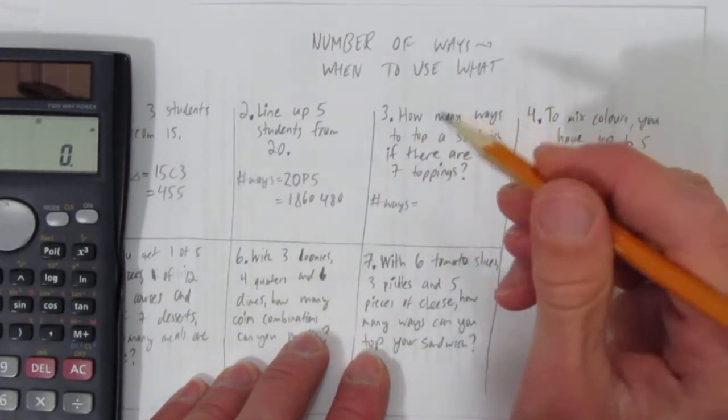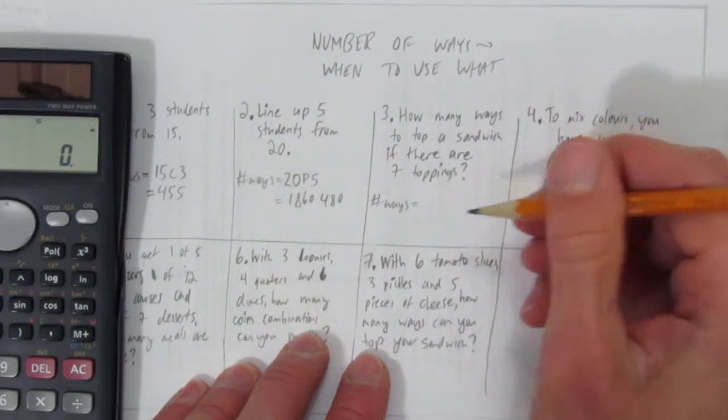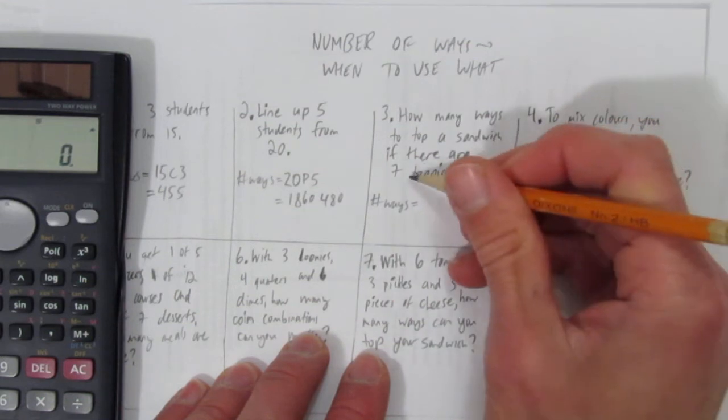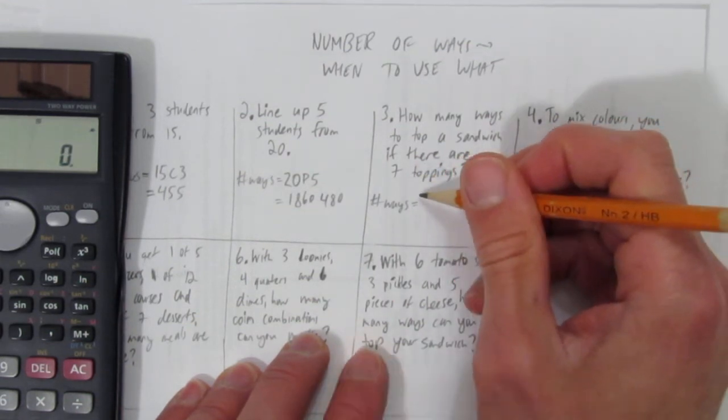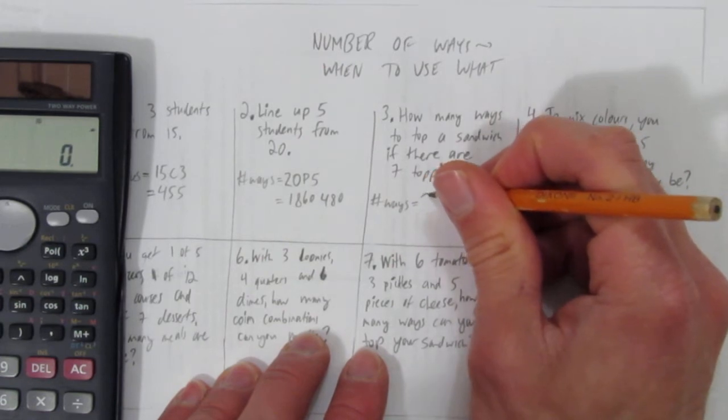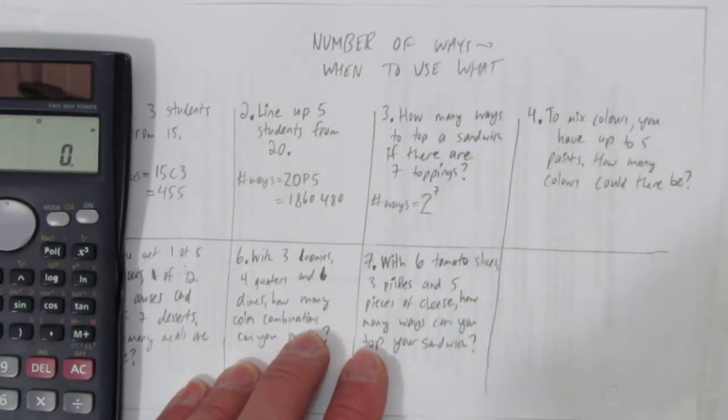You can either have topping one or not have it, and topping two or not have it. In other words, for every topping, there's two possibilities: include it or don't include it. This is the case of 2^n, or specifically in this case, 2^7.